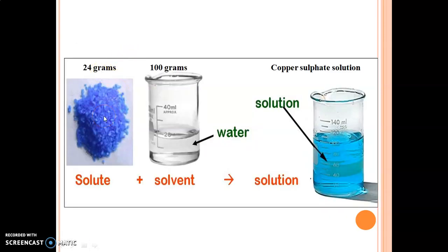Next is copper sulfate. 24 grams of copper sulfate dissolve in 100 grams of water at room temperature to make a saturated solution. If you add more than 24 grams, it will not dissolve at that temperature. So these two salts behave differently at the same temperature: common salt is 36 grams per 100 grams of water, while copper sulfate is only 24 grams per 100 grams of water.